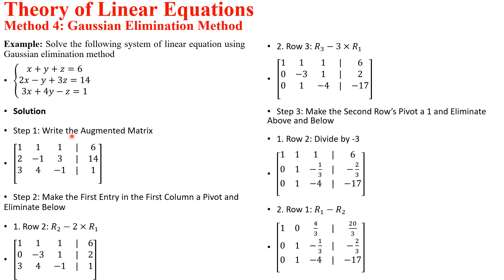The first thing to do is to write the augmented matrix. We write down the coefficients of all the variables. The coefficients of x in the first, second, and third equations are 1, 2, and 3. The coefficients of y in equations 1, 2, and 3 are 1, minus 1, and 4. The coefficients of z in equations 1, 2, and 3 are 1, 3, and minus 1. We then augment that matrix with the constant values: 6, 14, and 1.